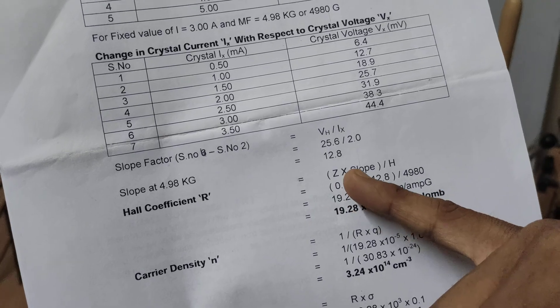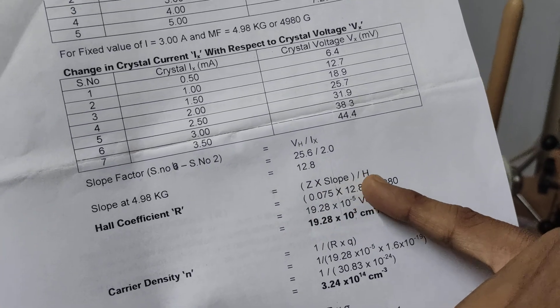Hall coefficient is nothing but t into slope. We have to remove t into slope.